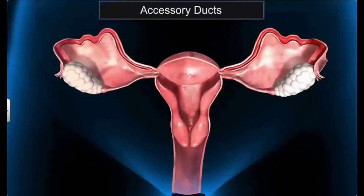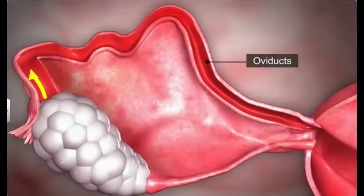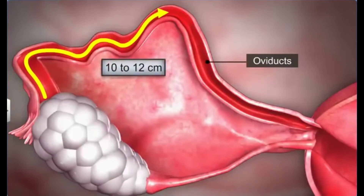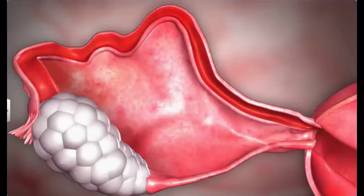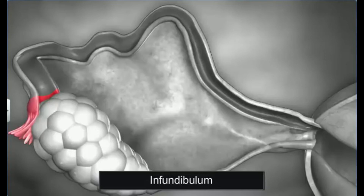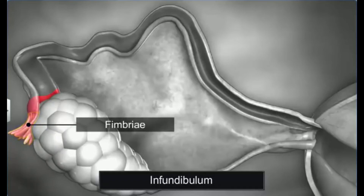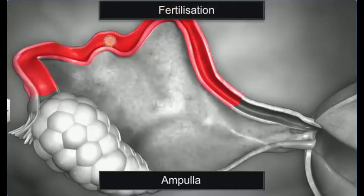The accessory ducts of the female reproductive system are the vagina, oviducts, and the uterus. The pair of oviducts, or fallopian tubes, is about 10 to 12 centimeters long and extends from the periphery of each ovary to the uterus. Each oviduct is differentiated into three parts: the infundibulum, which is a dilated funnel close to the ovary whose edges are surrounded by finger-like projections called fimbriae that help collect and push the ovum after ovulation; the ampulla, which is the swollen and curved part behind the infundibulum where fertilization of the ovum takes place.